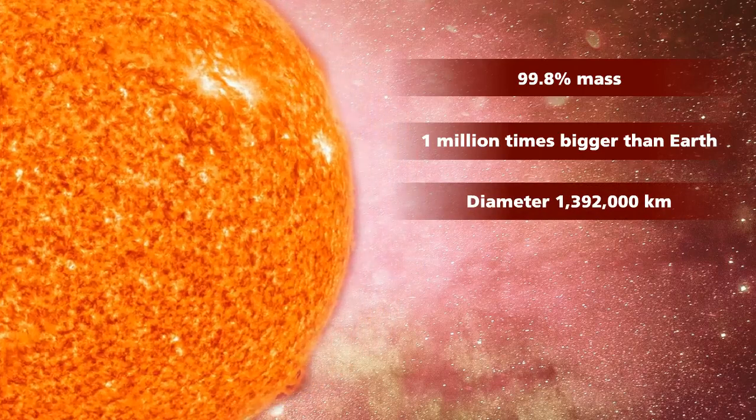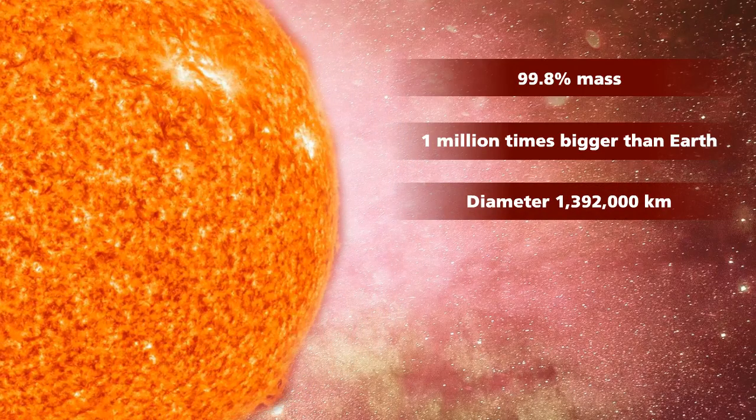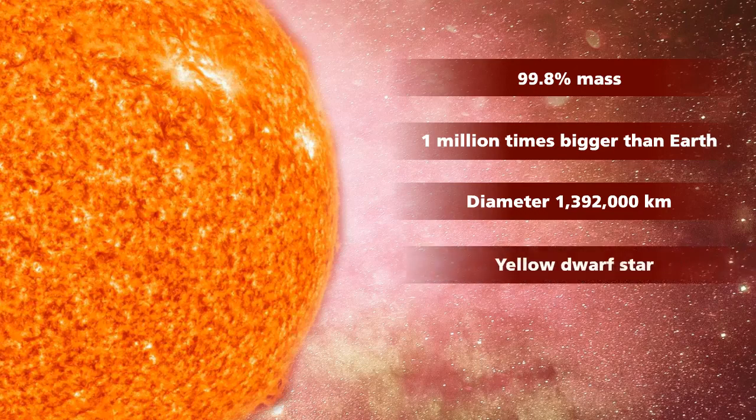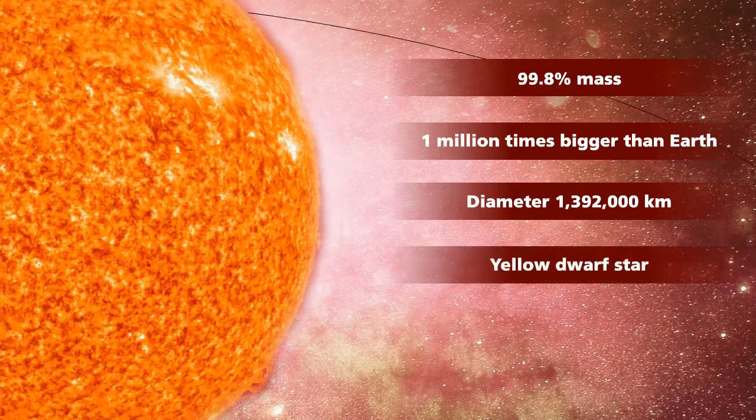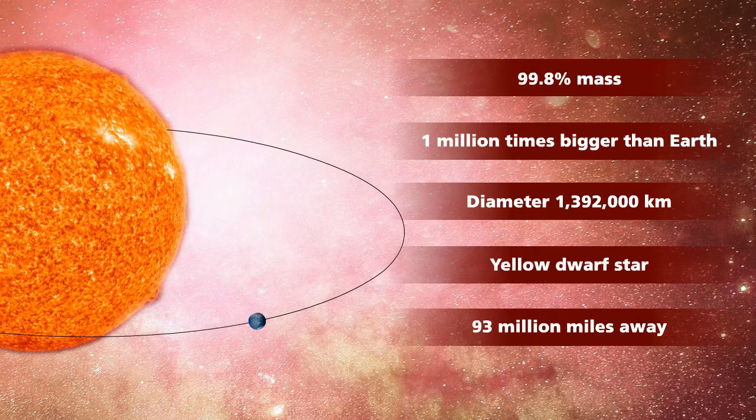But do you know that the sun still is not as large as other types of stars? It is classified as a yellow dwarf star. Our earth orbits 93 million miles away from it.